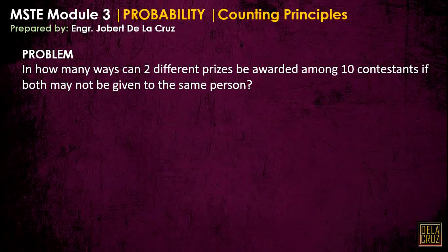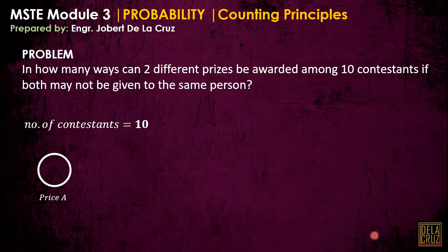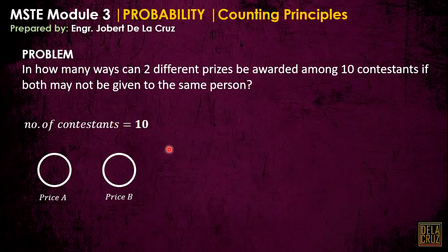Let's start to solve this problem. In how many ways can two different prizes be awarded among ten contestants, if both may not be given to the same person? We have ten contestants. We have two different prizes — let's call them Prize A and Prize B. How many ways can these two prizes be awarded from the ten contestants?